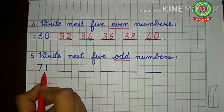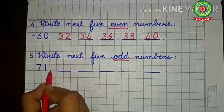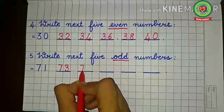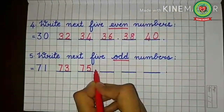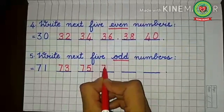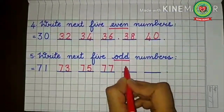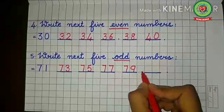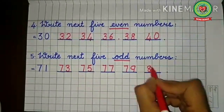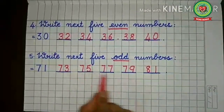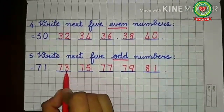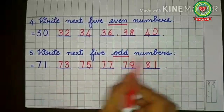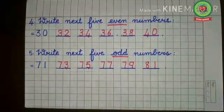Similarly, write the next five odd numbers after seventy-one. Seventy-one is already odd, so skip seventy-two and write seventy-three. Skip seventy-four, write seventy-five. Skip seventy-six, write seventy-seven. Skip seventy-eight, write seventy-nine. Skip eighty, write eighty-one. To check your answers, see the last digits: three, five, seven, nine, one — all odd numbers.